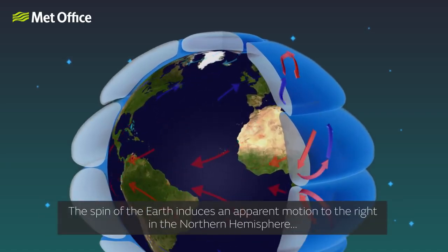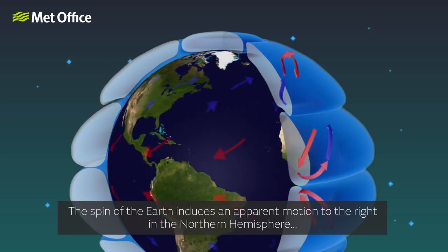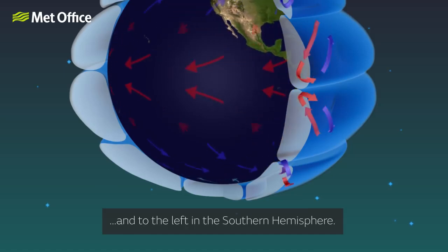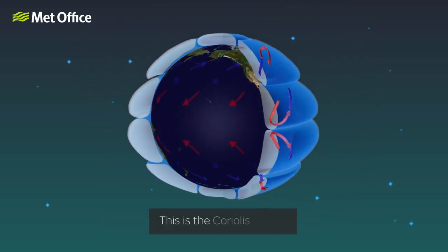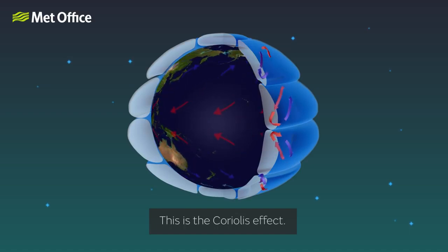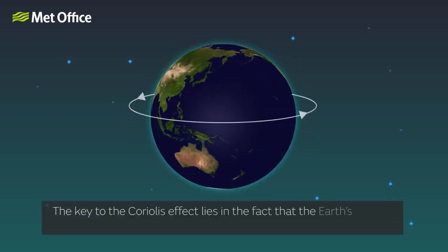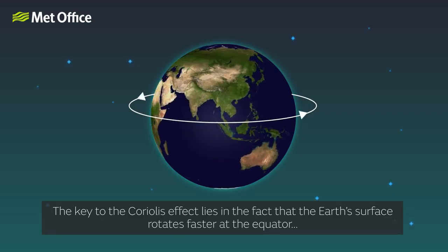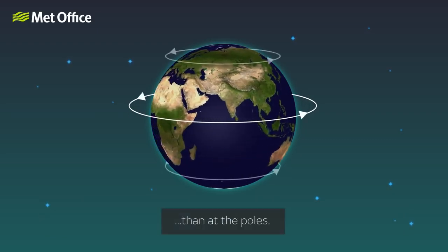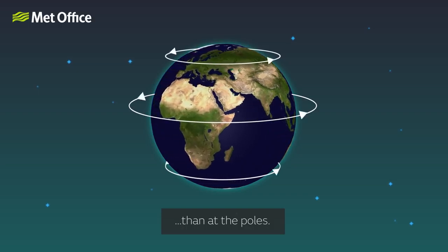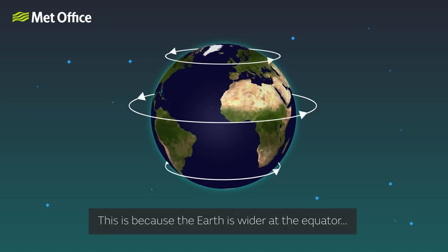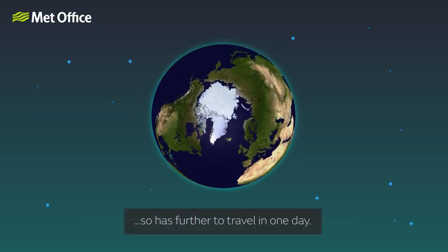The spin of the Earth induces an apparent motion to the right in the northern hemisphere and to the left in the southern hemisphere. This is the Coriolis effect. The key to the Coriolis effect lies in the fact that the Earth's surface rotates faster at the equator than at the poles. This is because the Earth is wider at the equator, so it has further to travel in one day.